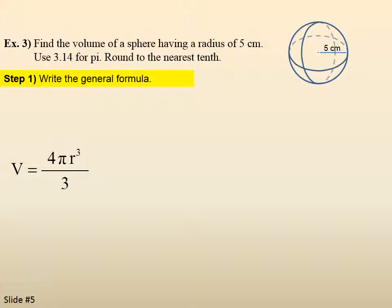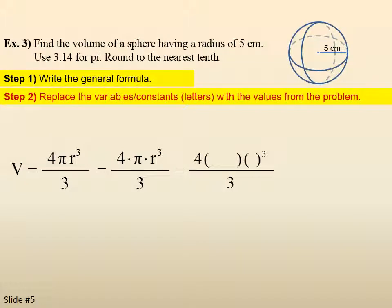It might be easier to write it this way. 4 pi r cubed over 3. Either way will work. I prefer this way. So it's 4 times pi times the radius cubed. So we plug in the values. Step 2. Replace the constants and letters with the values from the problem. So pi, we're told, is 3.14. The radius we can clearly see is 5.